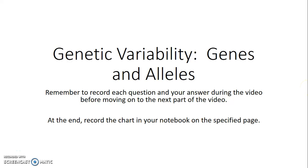Here's the second part of genetic variability. In the first part we learned that genetic variability can occur by crossing over during meiosis to create those four genetically different gametes. Building on that, in that video we talked about genes and alleles, and now we're going to go into more depth about what exactly alleles are.